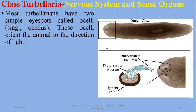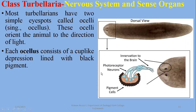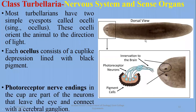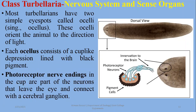A sense organ called an ocellus has also developed — just for light detection. The plural form is ocelli. An ocellus looks like a cup-like depression lined with black pigment cells surrounding it. Neurons project out from the ocellus and carry the message of light toward the cerebral ganglia for further processing. It has also been observed that planaria show negative phototaxis.